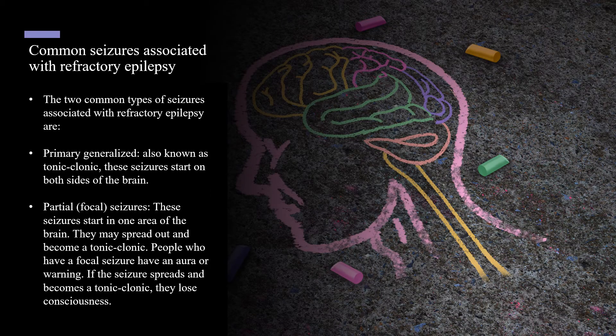Two common types of seizures associated with refractory epilepsy are primary generalized and partial seizures. Primary generalized, also known as tonic-clonic, start on both sides of the brain, resulting in the person losing consciousness. Partial or focal seizures are located in only one area of the brain. The person may experience an aura from the seizure. In some situations, the seizure can spread to other areas of the brain, resulting in a tonic-clonic seizure.